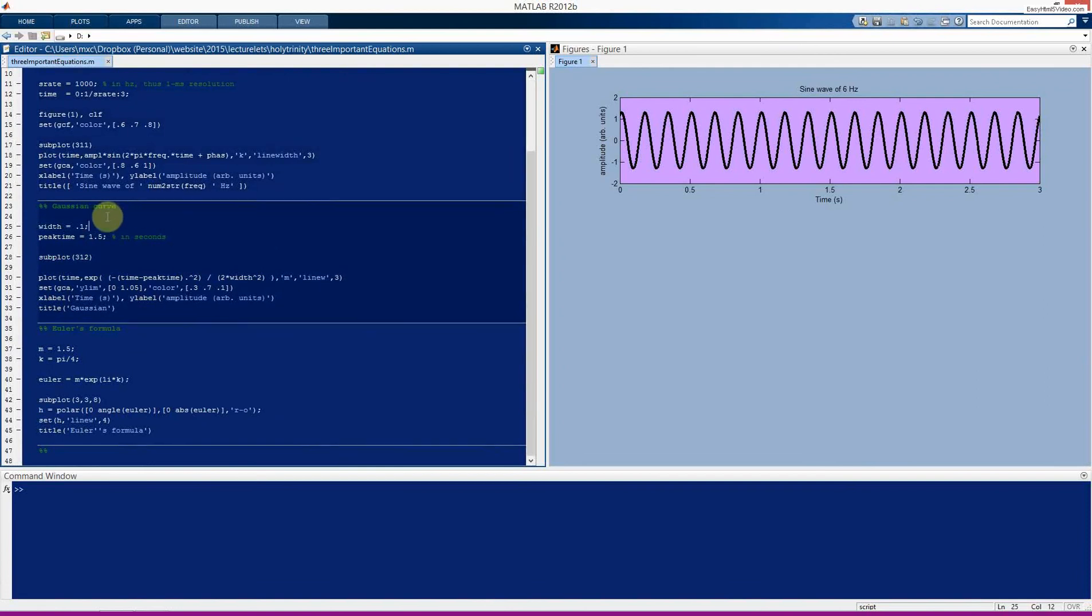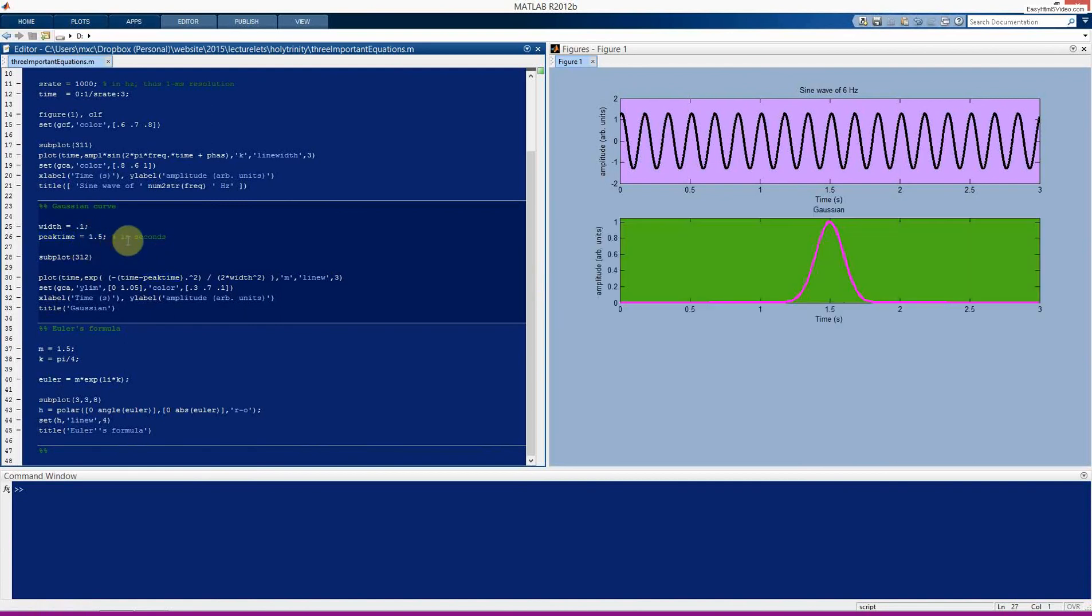Here we will plot a Gaussian. Here I define the width, which in the PowerPoint slide, I use the parameter s. So here I'm using the variable name width. And here is this peak time, which I didn't include in the equation. But here I'm setting the peak time to be 1.5 seconds.